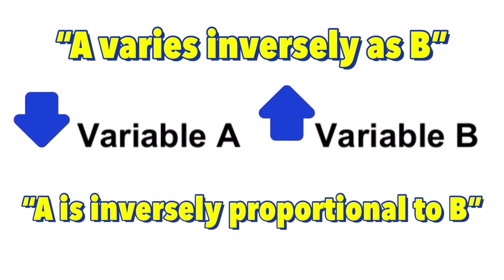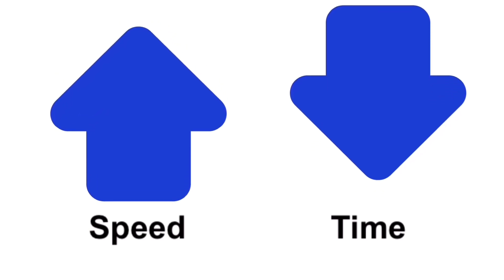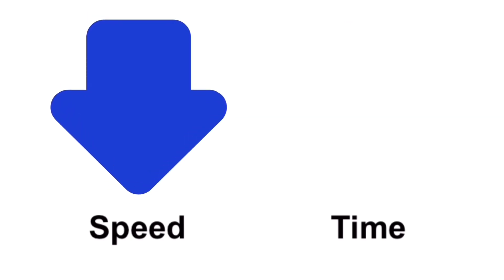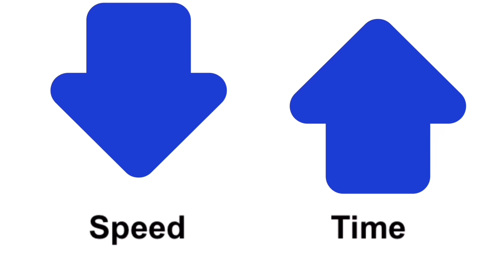Let's look at some real-life examples of inverse variation. Speed and time are inversely proportional to each other, which means that if a car moves at a faster speed, it takes less time to get to the same destination. That makes speed and time inversely proportional to each other.